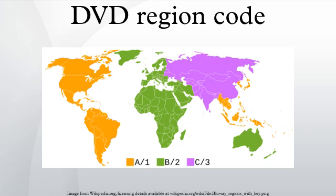Regarding video game consoles, the Xbox, Xbox 360, PlayStation 2, and PlayStation 3 are all region locked for DVD playback. The PlayStation 2 can be modified to have its regional locking disabled through the use of modchips. Although region locked on film DVDs and film Blu-ray discs, the PlayStation 3, PlayStation 4, and Xbox One are region free for video games.